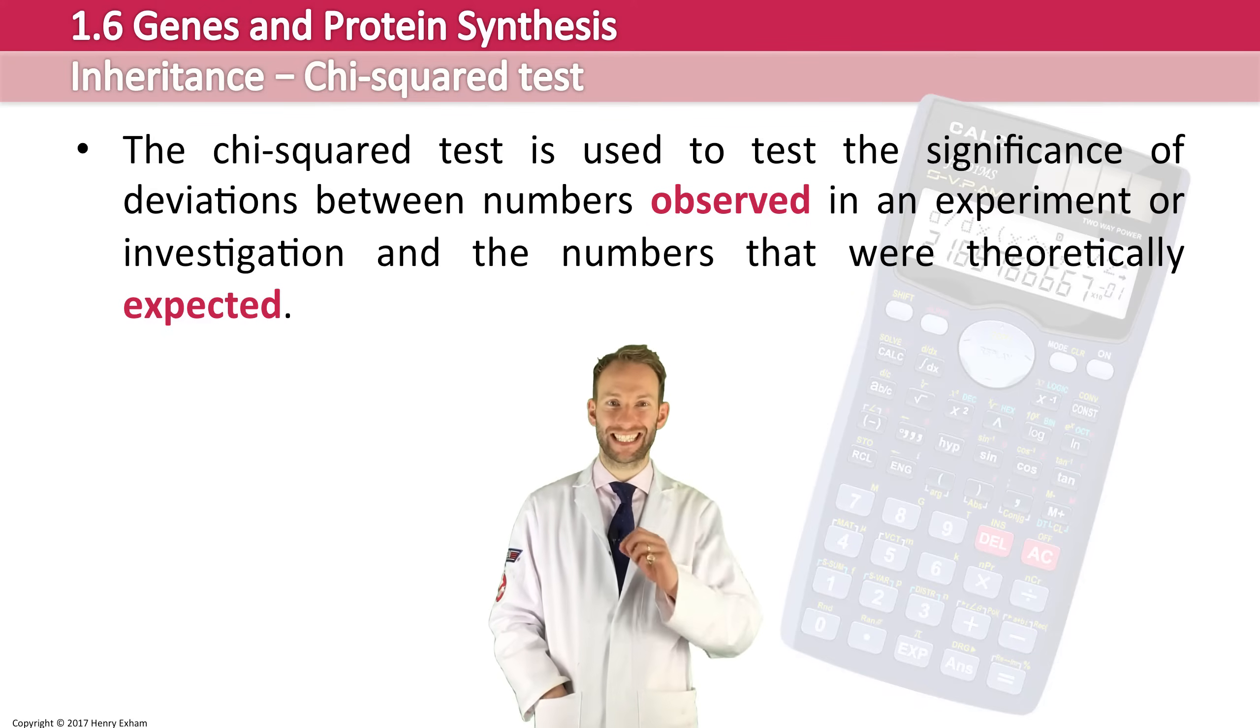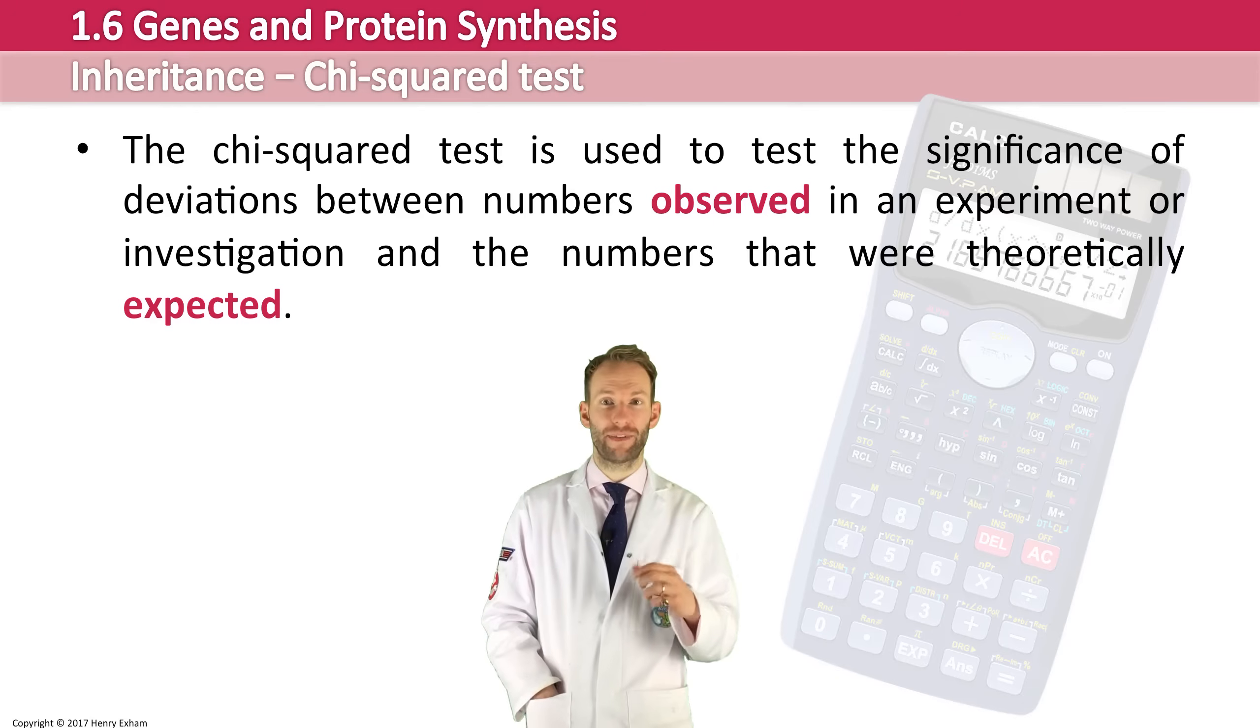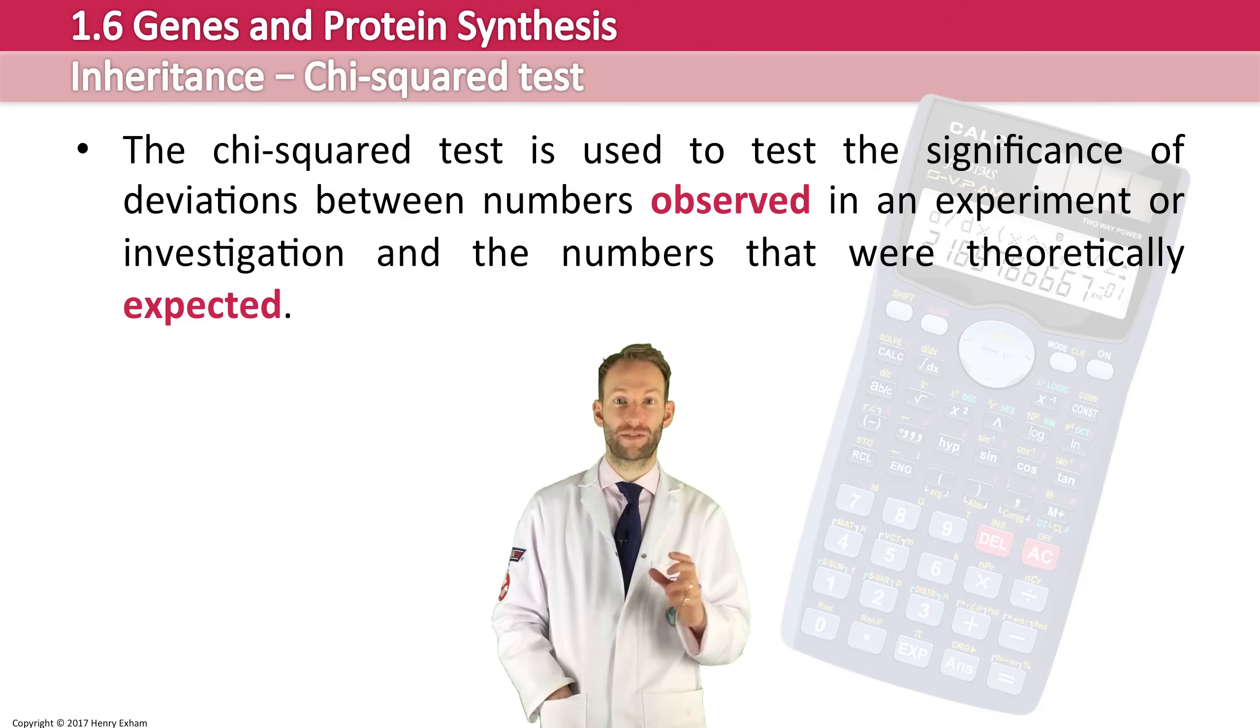So we're able to do a test to see how close the observed are or how different the observed are from the expected values and see if that is significantly different, statistically significant. It is particularly valuable in genetics to determine if the phenotype ratios of the offspring fit with the expected ratios. So that's what we're going to look at here.